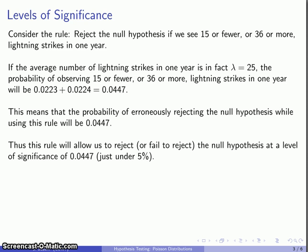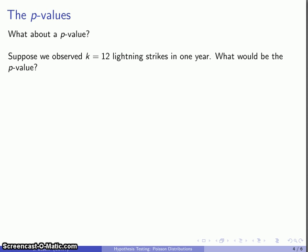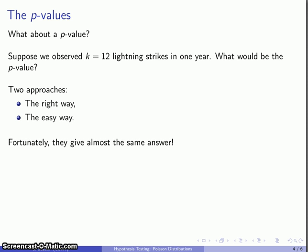We have another way of looking at hypothesis testing, and that's to look at the p-value. The p-values are going to be a little bit more complicated for a Poisson distribution. To see how that might work, suppose we actually make an observation — say that there are 12 lightning strikes in one year — and how can we find the p-value? There are actually two slightly different approaches: one is to do things the right way and the other is to do things the easy way, and fortunately they give us almost exactly the same answer. We'll do things the right way first.